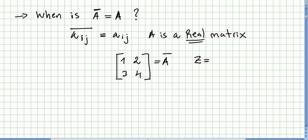And if z is a real number, two conjugate will be two, right? So the conjugate will be the same matrix if and only if A is a real matrix, meaning all the entries are real numbers. So A and A bar are the same.